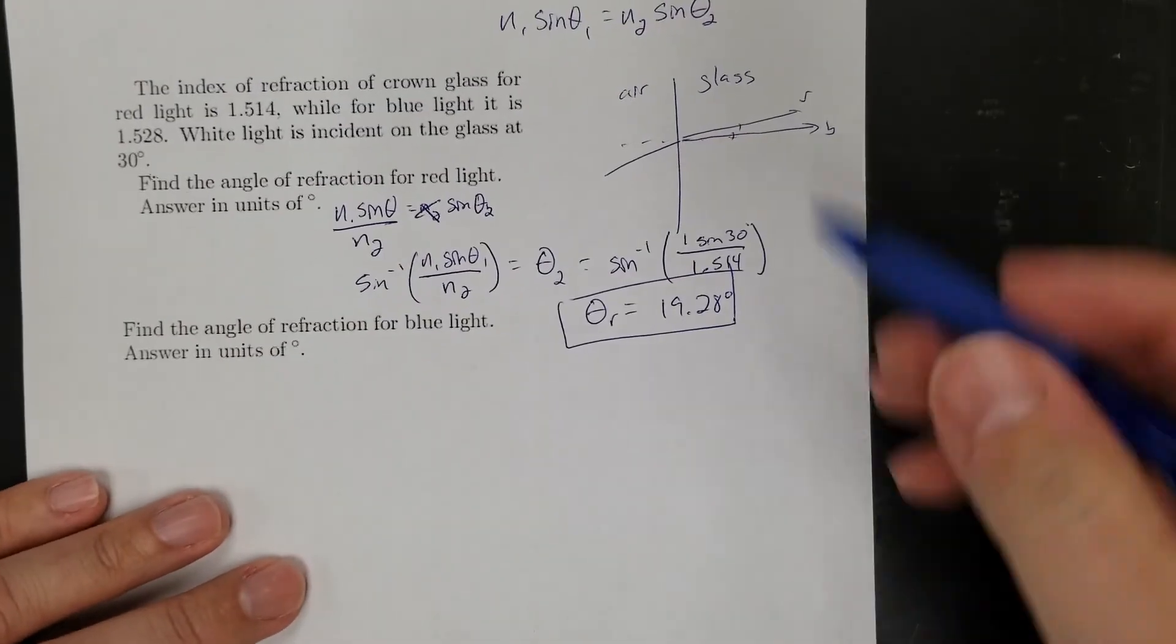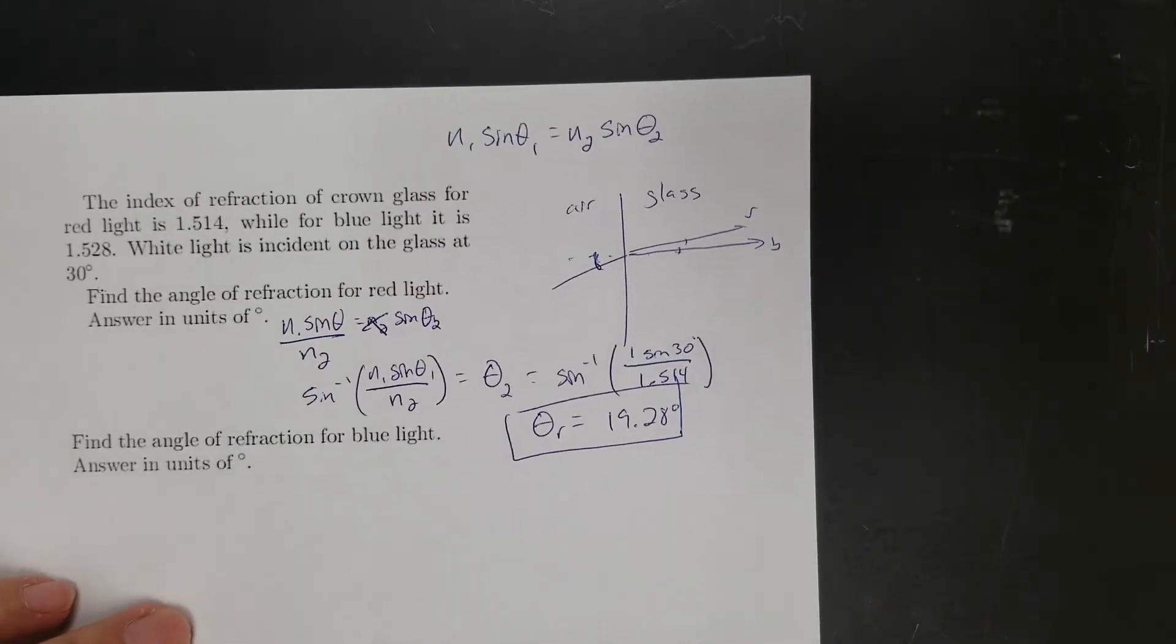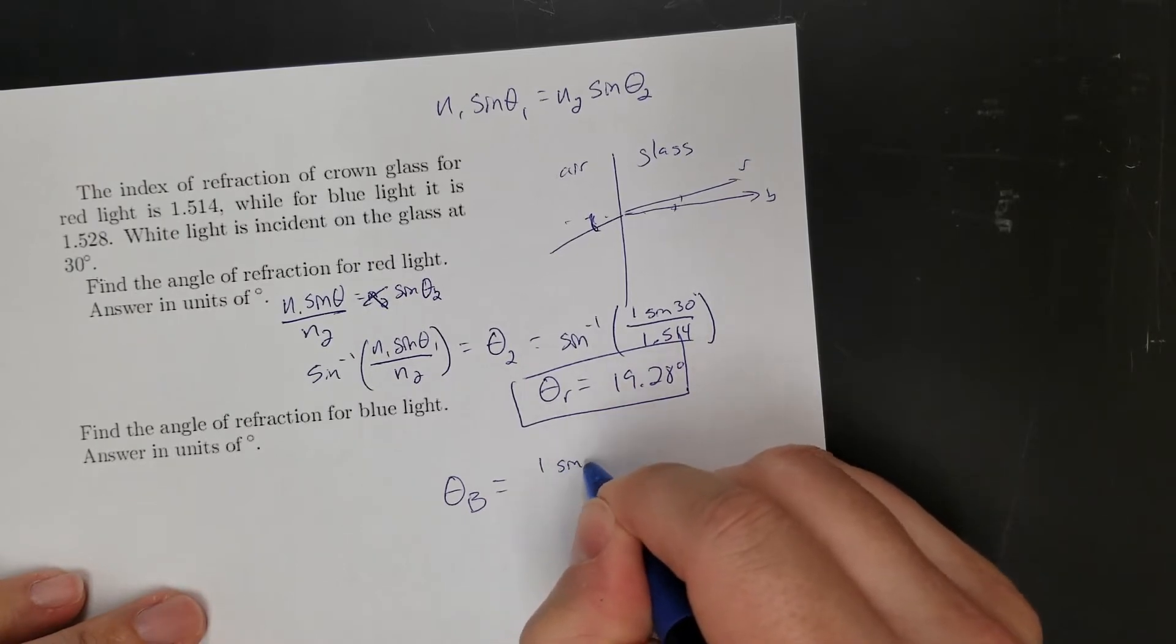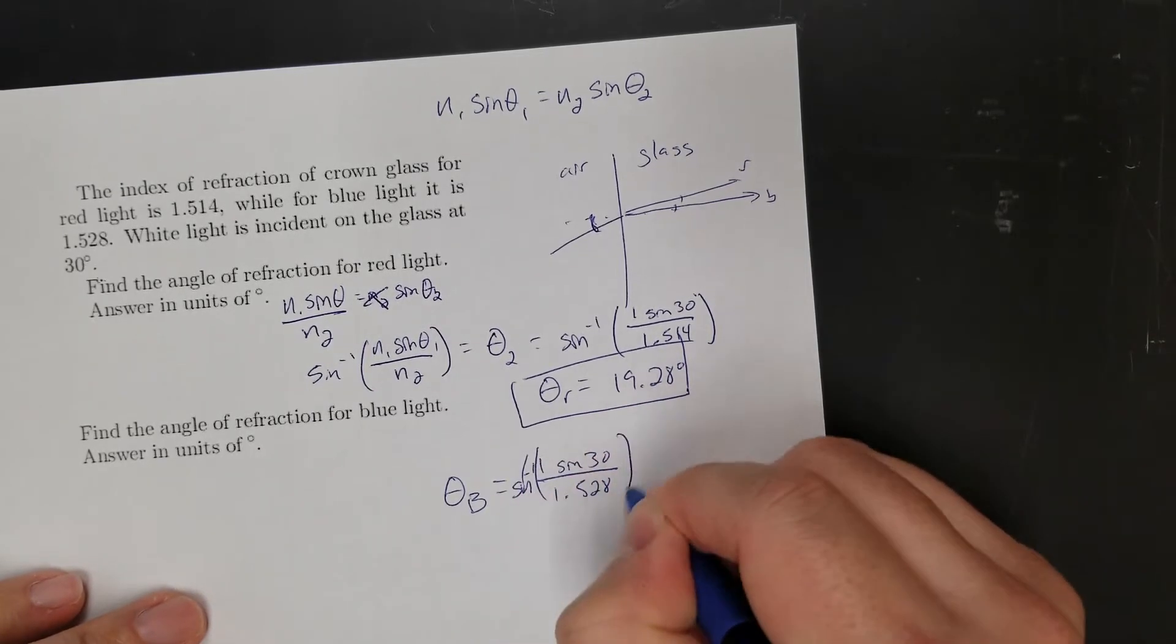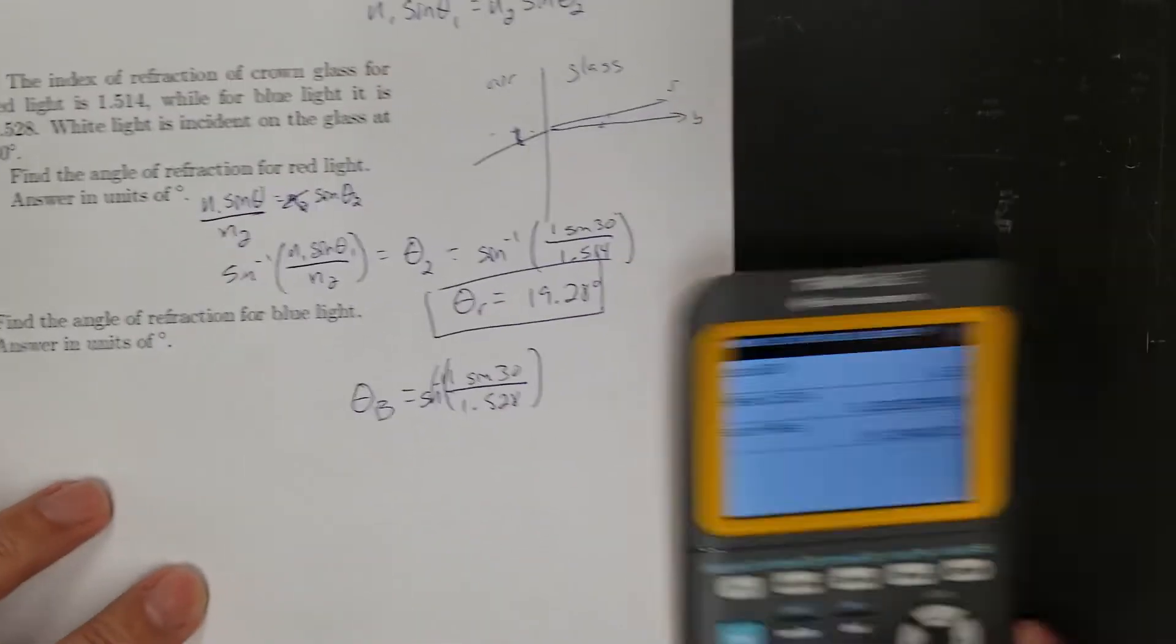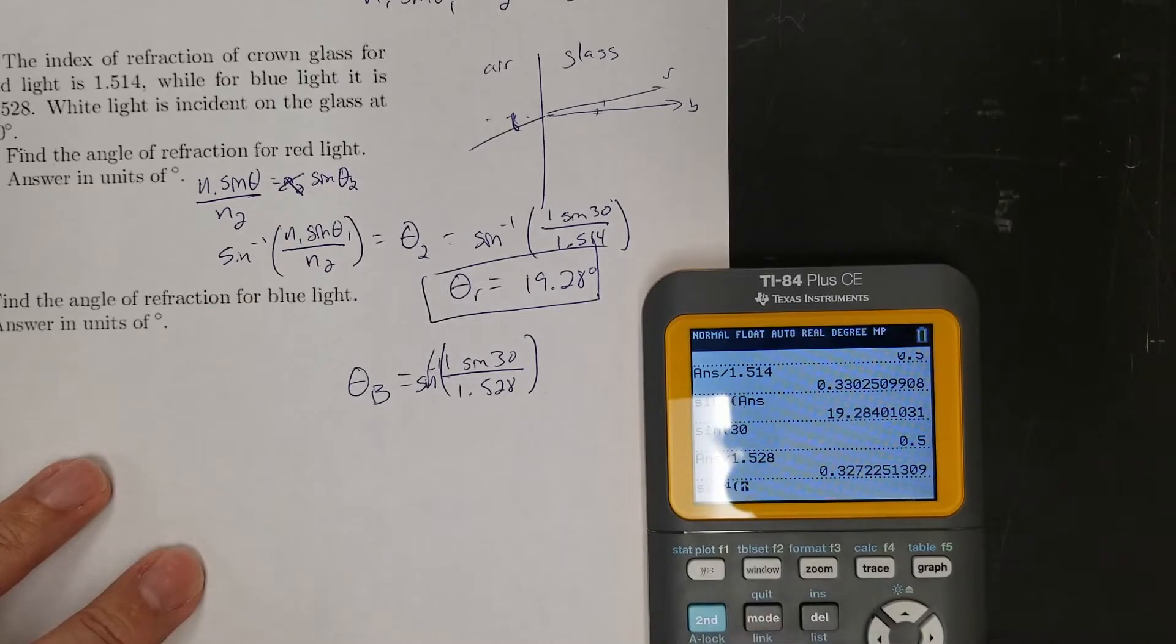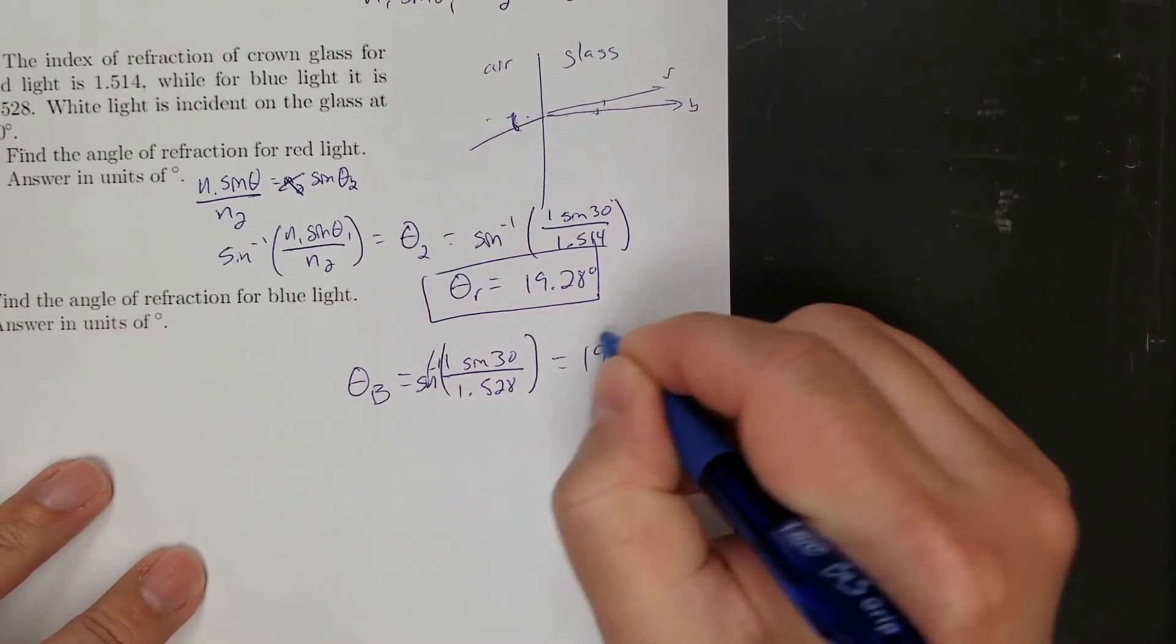So the blue should be the same concept, except I'm just swapping out, because it's the same angle here. I'm just swapping out a different index of refraction. So theta blue should be 1 sine 30 over 1.528, the arc sine of all of that. Same thing as up there. So if I do that, sine 30, hit enter, divided by 1.528, then take the arc sine, 19.10.